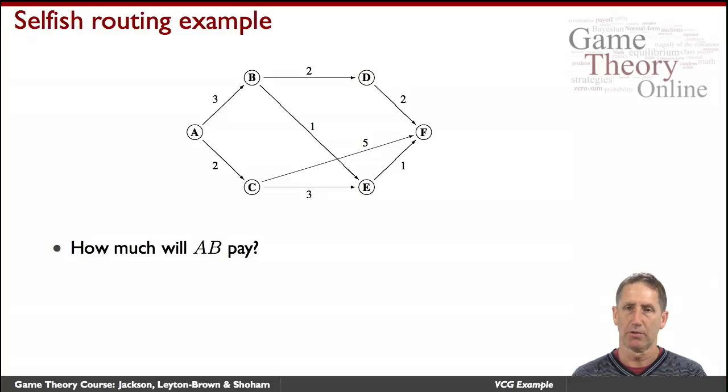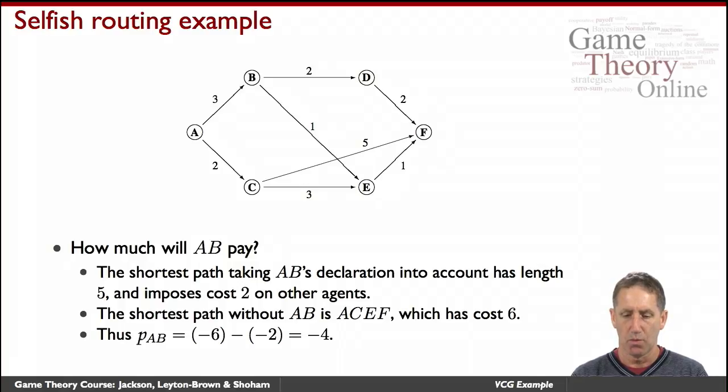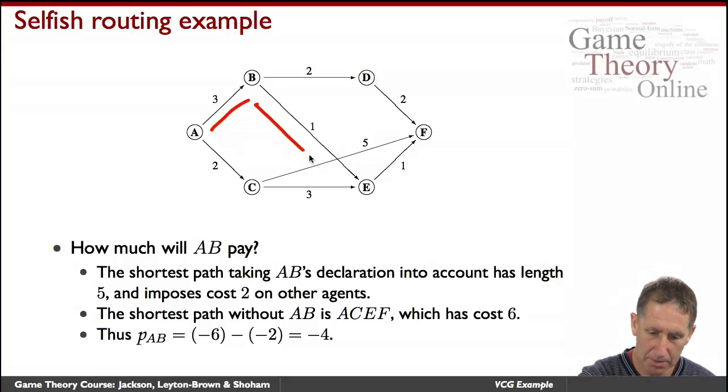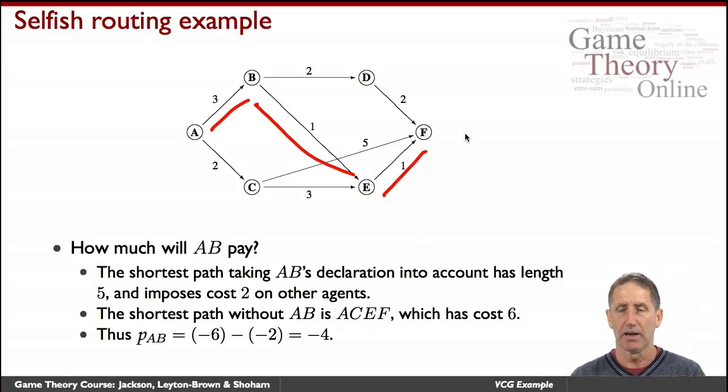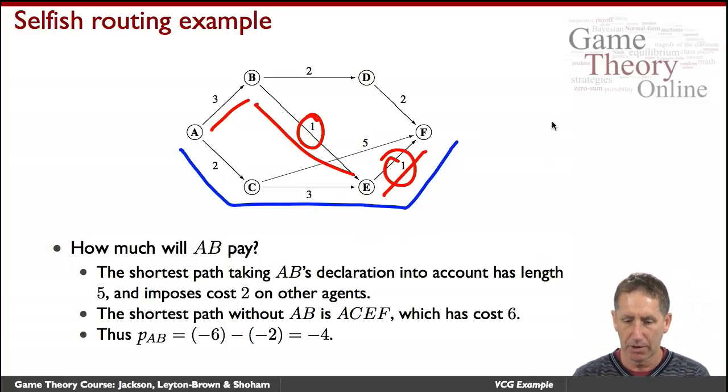What about edges that do participate in the shortest path? Let's look, for example, at AB. The shortest path, as we know, is this one. The shortest path taking AB's declaration into account has length 5, and imposes cost 2 on other agents. The shortest path without AB would have been this one over here.